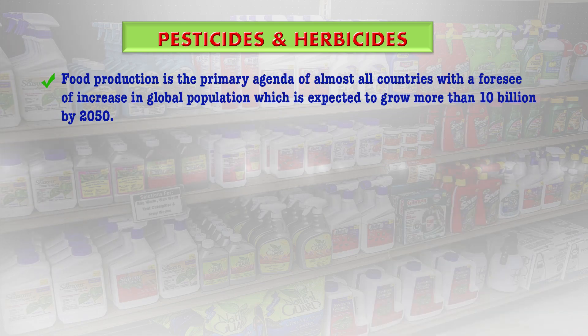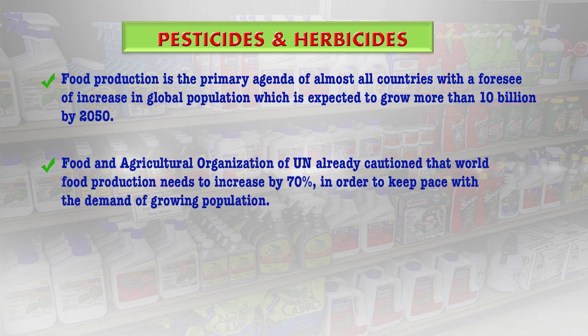Food production is the primary agenda of almost all countries, with a foreseen increase in global population expected to grow to more than 10 billion by 2050. The Food and Agricultural Organization of the United Nations has already cautioned the world that food production needs to increase by 70 percent in order to keep pace with the demand of the growing population, putting tremendous pressure on existing agricultural resources like land and water.